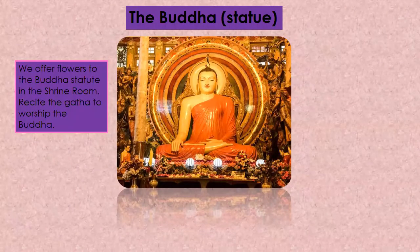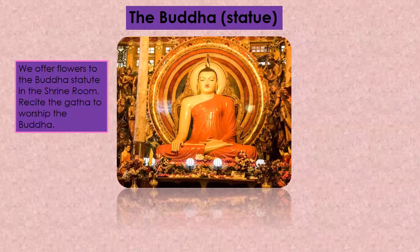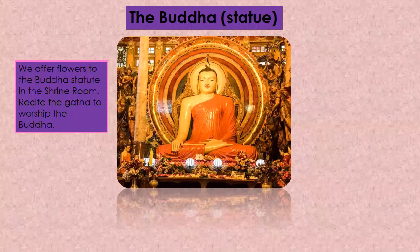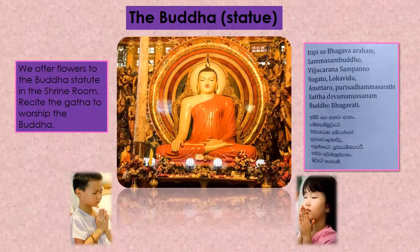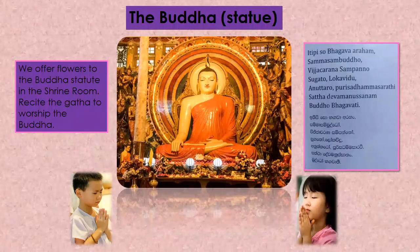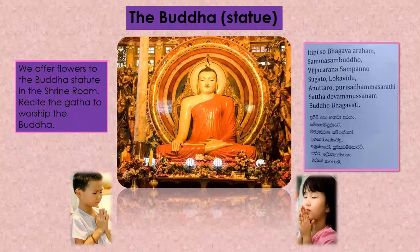Next, the Buddha statue. We offer flowers to the Buddha statue in the shrine room and recite the gatha to worship the Buddha: Anuttaro purisa dhamma sartti satta deva manusana buddha bhagavati.